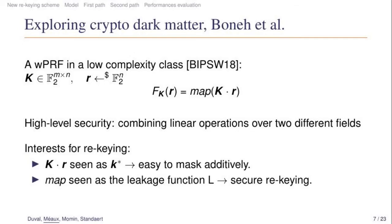So the interest for rekeying is the following: The part k times r will be our rekeying, the way we will obtain the temporal key k*. And since it will be the multiplication of a matrix by a vector over Fp, it will be easy to mask with an additive masking over Fp. And then we want the map to be the leakage function which is provided by the implementation. So if the leakage function corresponds to a linear function over a field which is not the one where we do the multiplication, the combination of both will give us security. And the new strength of rekeying is that for once we will use the security which is given by the leakage itself.